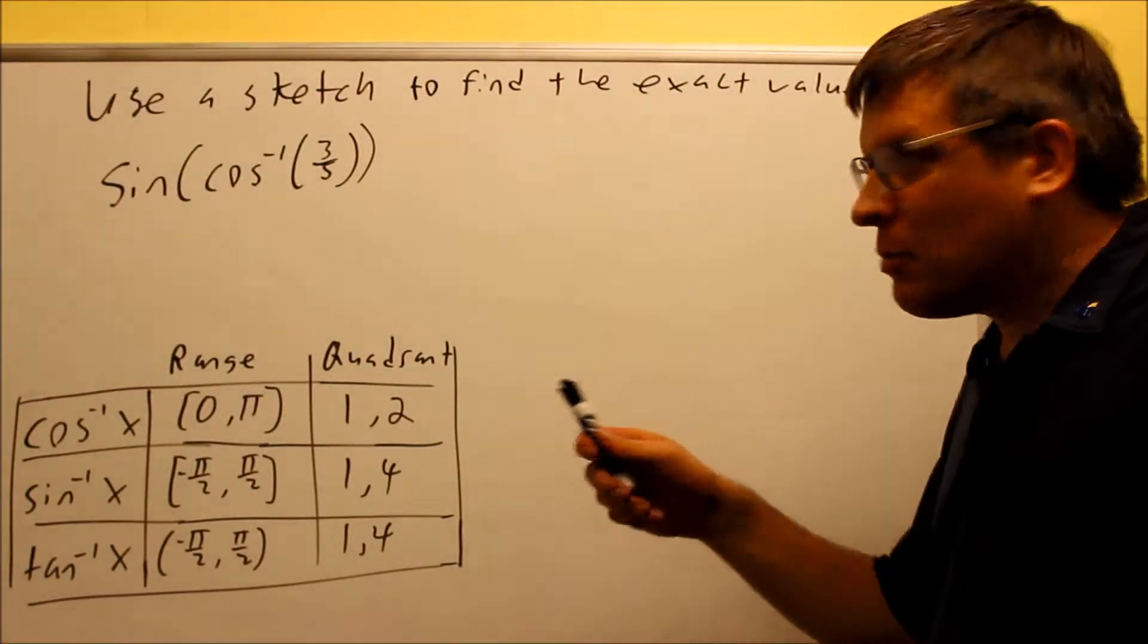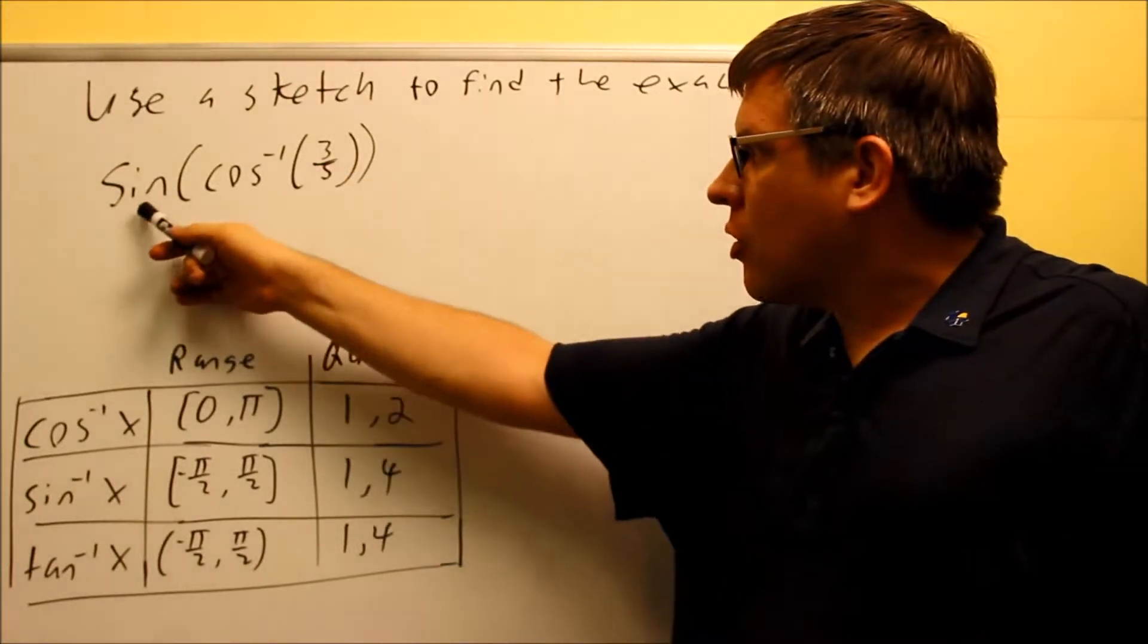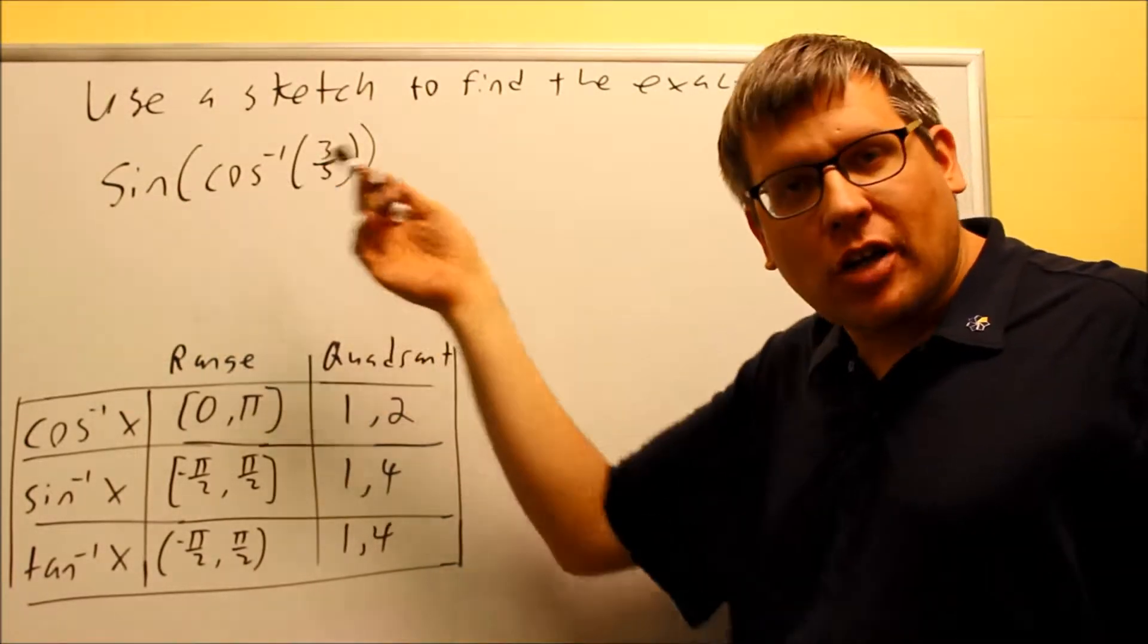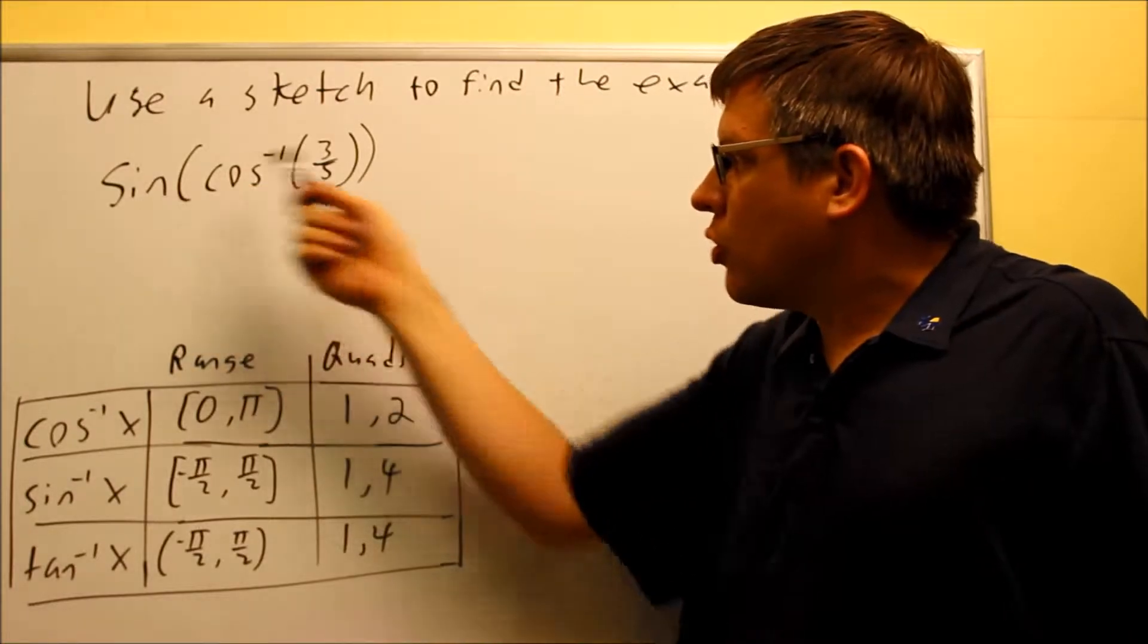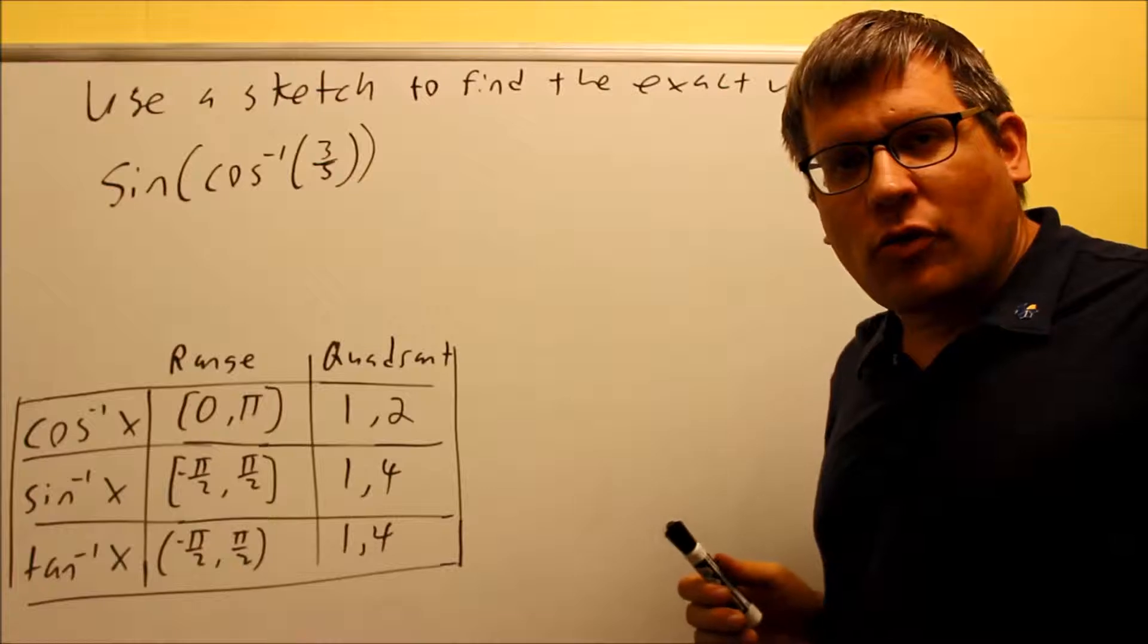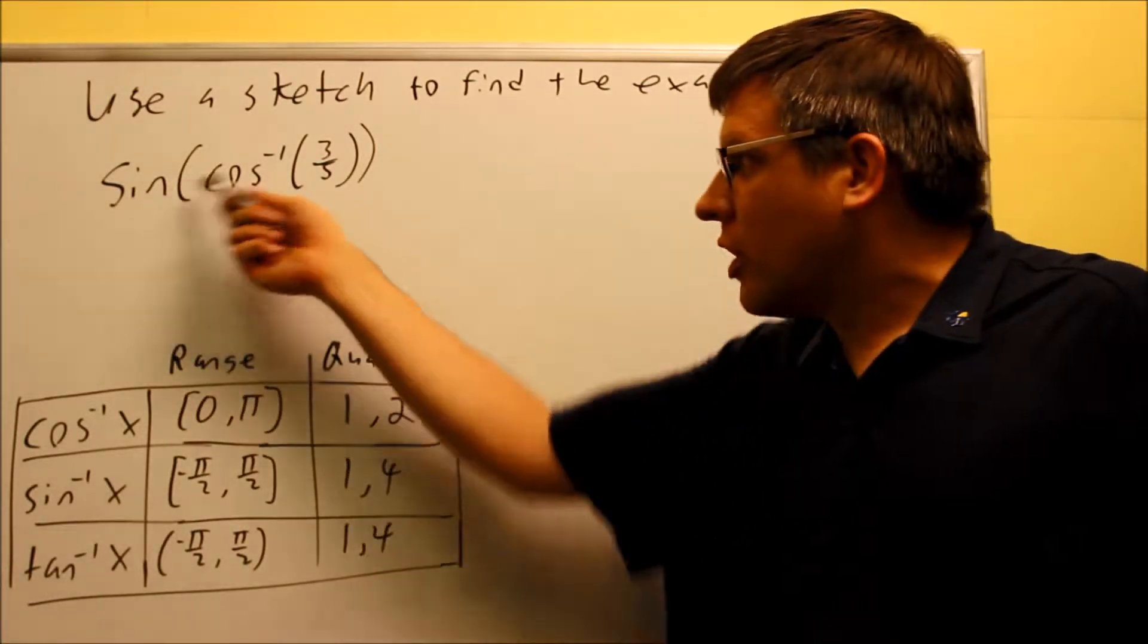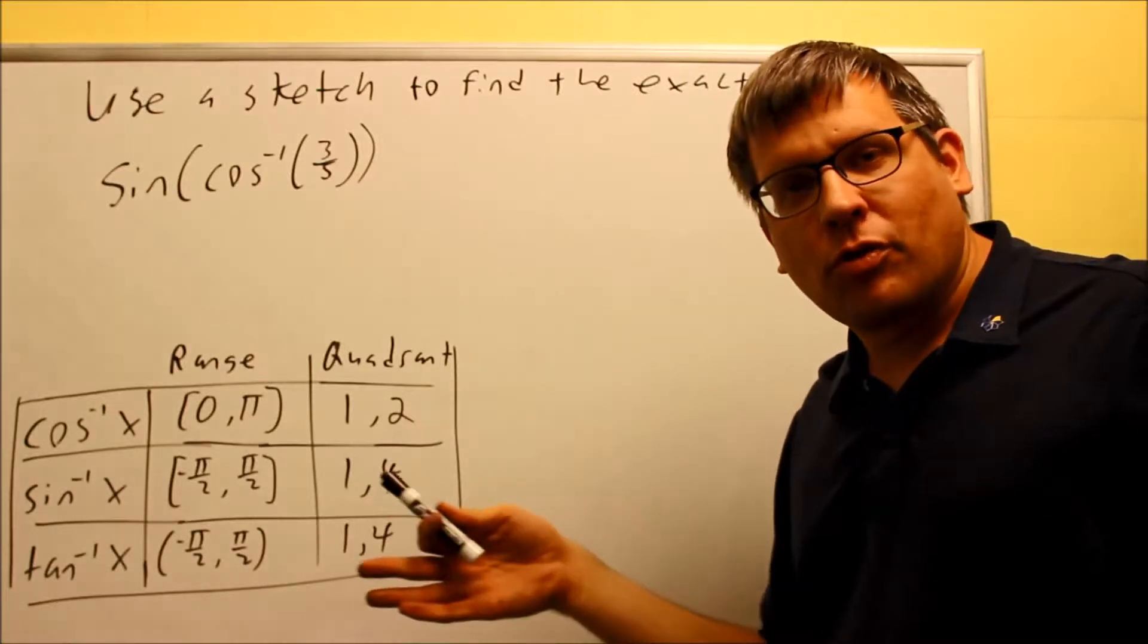In problems we looked at previously, we had some problems where these two functions were the same. Maybe we would have cosine of inverse cosine or sine of negative sine, but this time we're looking at problems that are different. So this time we have a different process for solving these. We can't just simply cancel it out and get three-fifths for the answer because we don't have the same trig function. So now we're going to do a different process.